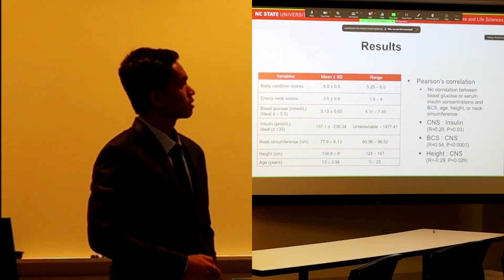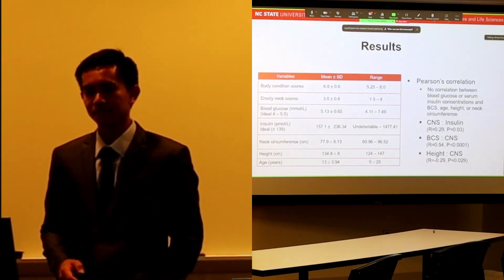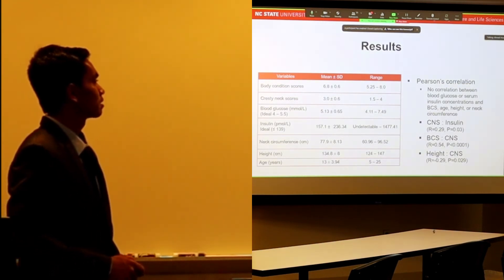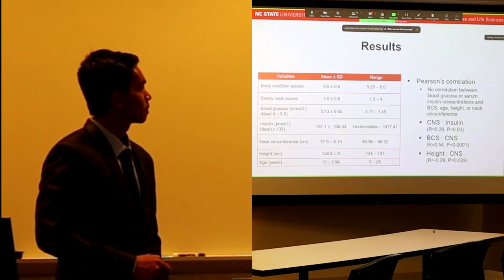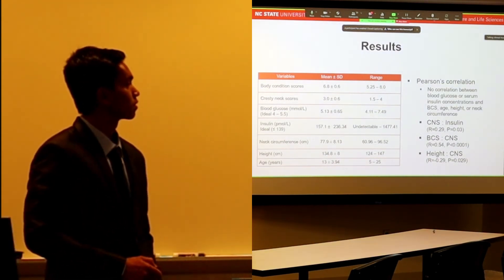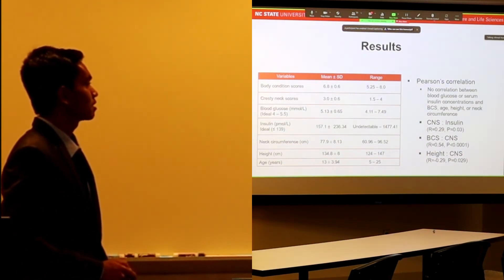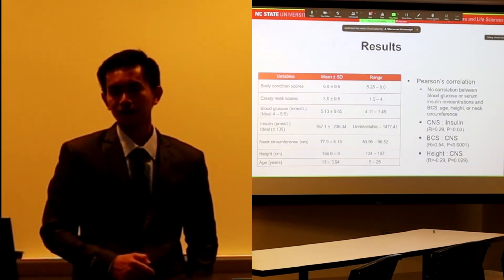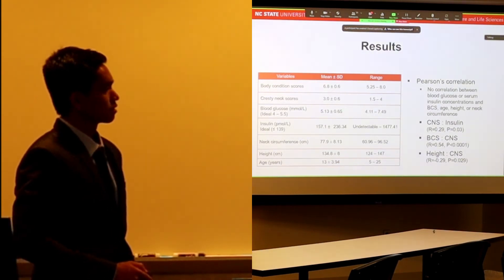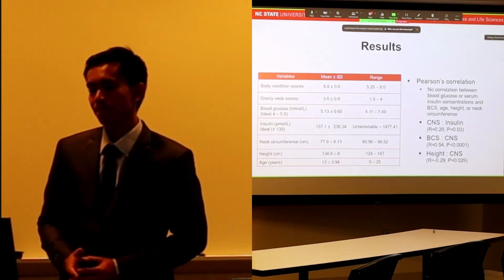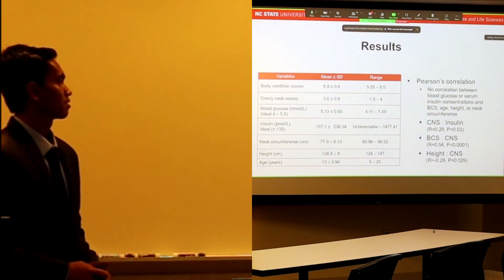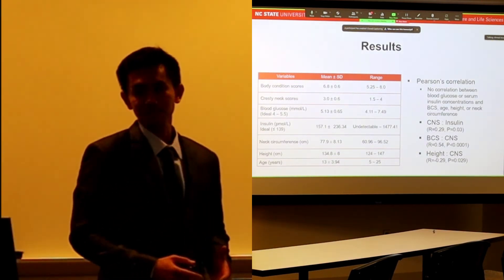Here are some descriptive data from this study. You can see the mean and range. For body condition score, cresty neck score, and insulin in particular, we can see the means are actually higher than the normal range.